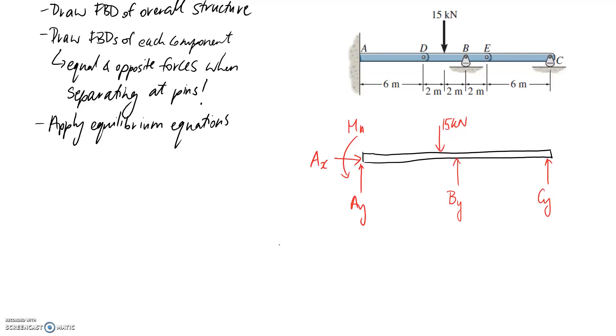So if I draw the free body diagram of AD, first of all, just pull out that little piece. So we're going to need to transfer down the support reactions from at the wall. So this will be AX, AY, and MA.